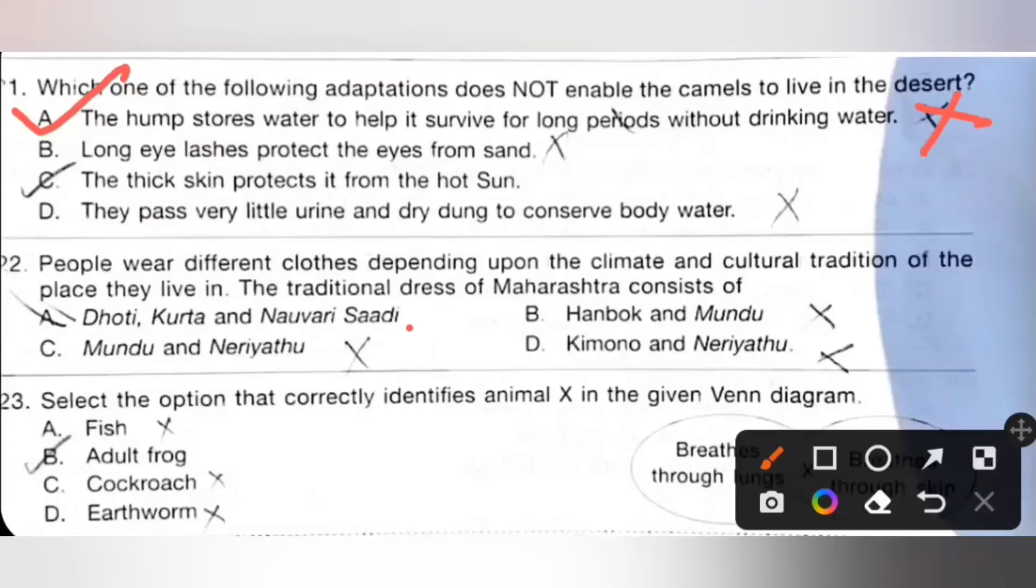Twenty-two: People wear different clothes depending upon the climate and cultural tradition of the place they live in. The traditional dress of Maharashtra consists of option A: Dhoti, kurta, Navari saree. It is the correct one. Option A is the correct answer.